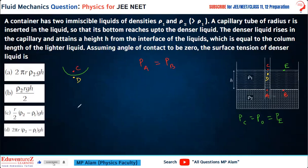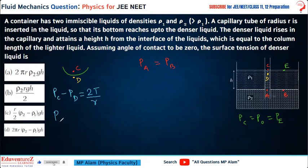Point C has the lowest pressure. We write 2T/R here because there is one free surface on the C side — the D side does not have a free surface. So it behaves like an air bubble inside water (which has one free surface), or like a liquid drop. Therefore, the excess pressure formula gives: pressure at C minus pressure at D equals 2T/R.